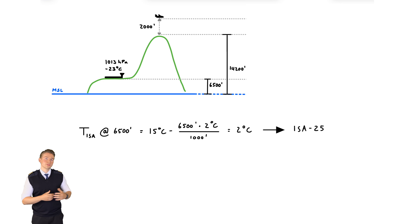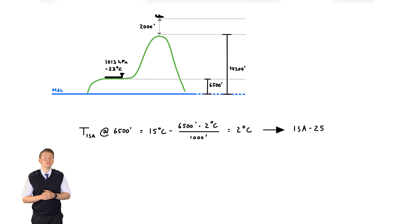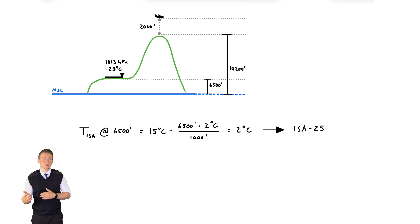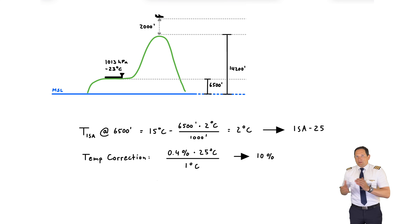These ISA values for doing these calculations have to be learned by heart. With minus 23 degrees, the temperature is therefore minus 25 degrees below ISA — so way colder. The formula for the temperature correction is 4% for every 10 degrees of ISA deviation, or simply 0.4% for every degree. A 25-degree deviation will therefore result in a 10% correction factor. But the question is now: what is the factor applied to, and in which direction?